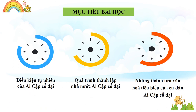Chúng ta đã tìm hiểu về điều kiện tự nhiên và về quá trình thành lập của nhà nước Ai Cập cổ đại. Và trong tiết học của tuần này, chúng ta sẽ tìm hiểu mục tiêu cuối cùng, đó là những thành tựu văn hóa tiêu biểu của cư dân Ai Cập cổ đại.